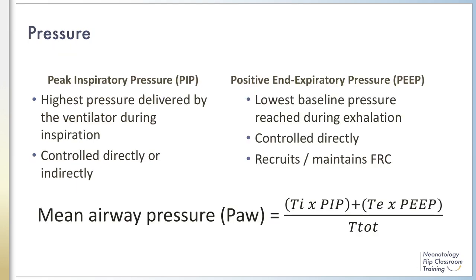Pressure from the conventional ventilator is delivered in several ways. The peak inspiratory pressure, or PIP, is the highest pressure delivered by the ventilator during an inspiration. PIP can be controlled both indirectly and directly. During pressure-targeted ventilation, PIP is chosen directly by the clinician and remains static. During volume-targeted ventilation, PIP is indirectly chosen and is variable depending on lung compliance. An elevated PIP may increase the risk of barotrauma, volutrauma, and BPD.